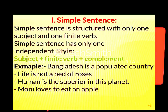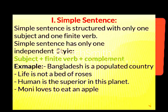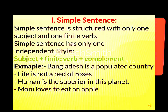A simple sentence has only one subject and one independent clause. Examples: 'Bangladesh is a populated country.' 'Paris is a small country.' 'Rubina is a beautiful and talented girl.' 'Life is not an easy process.' 'Human is the superior being on the planet.' 'I love to play cricket.'